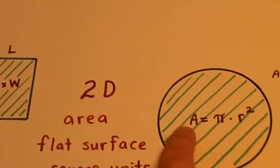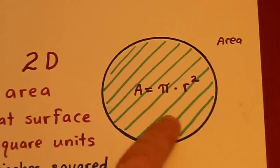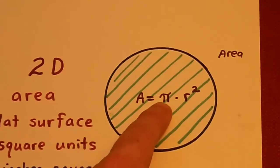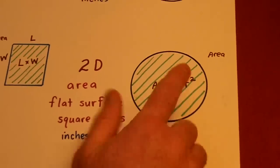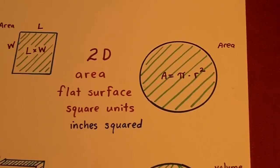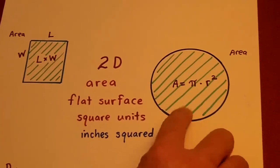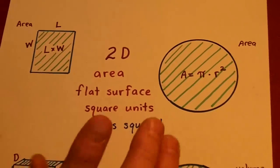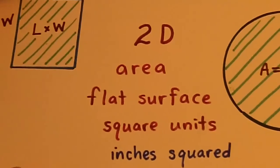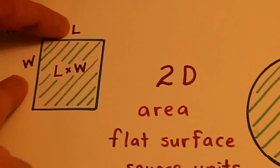Whereas over here, the area for this tabletop, the flat surface area, is pi times R squared, kind of a fancy formula there. But it's still measuring the number of square blocks. Now, those square blocks are length times width.